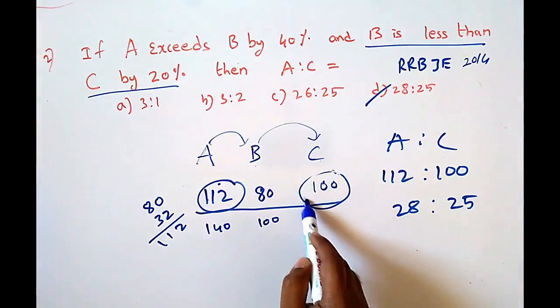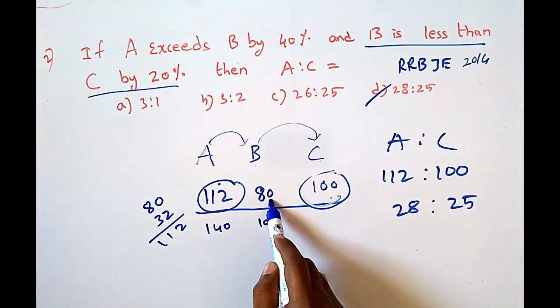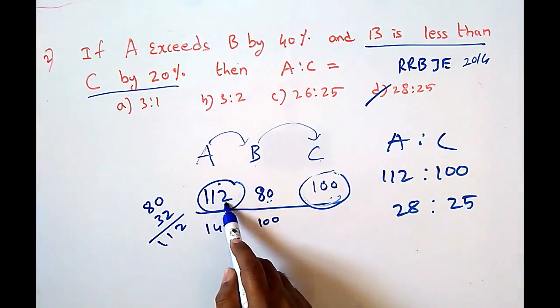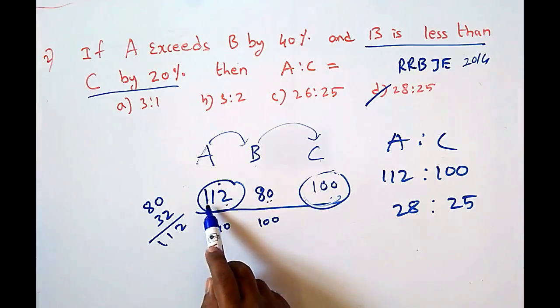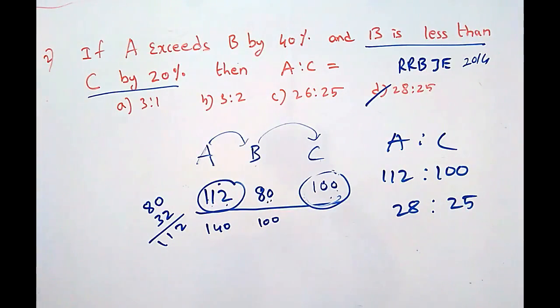The key approach here is: first consider C, then from C find B, then from B find A, and finally find A to C. We should not consider A and B first because B is interdependent on C.